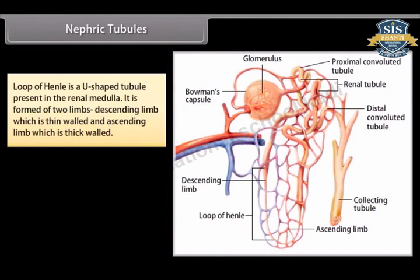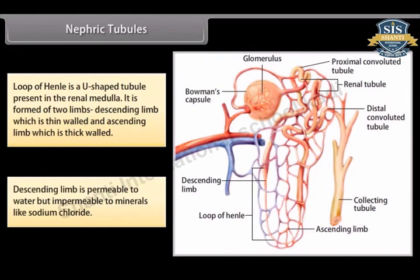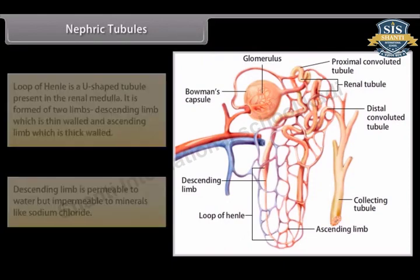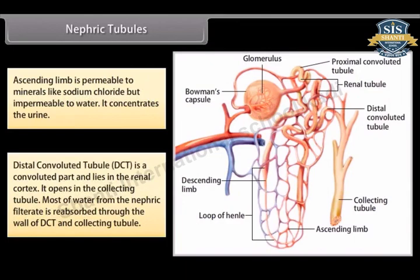The loop of Henle is a U-shaped tubule present in the renal medulla, formed of two limbs: a thin-walled descending limb and a thick-walled ascending limb. The descending limb is permeable to water but impermeable to minerals like sodium chloride, while the ascending limb is permeable to minerals but impermeable to water — it concentrates the urine. The DCT lies in the renal cortex and opens into the collecting tubule, where most water from the nephric filtrate is reabsorbed.